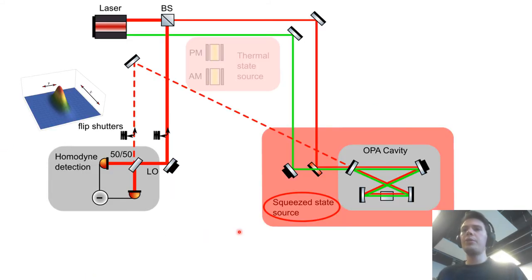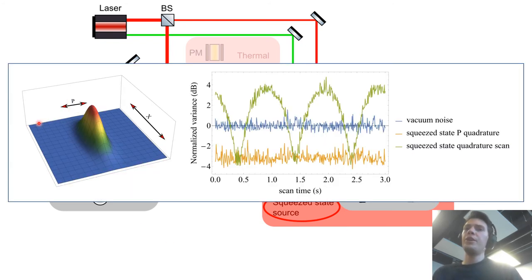We then ran the protocol with a squeezed state source that we generated with a doubly resonant OPA cavity. Now this state is interesting because it allows us to increase the amount of randomness that we can extract.